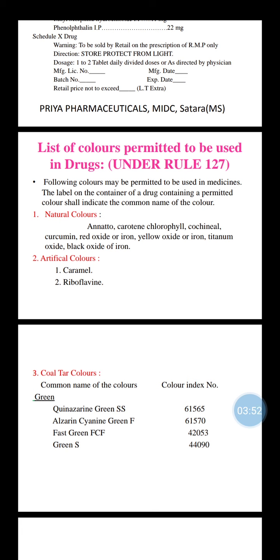The next topic is the list of colors permitted to be used in drugs under Rule 127. The following colors may be permitted to be used in medicine. The label on the container of a drug containing a permitted color shall indicate the common name of the color. These colors are classified as: natural colors, artificial colors, and coal tar colors.